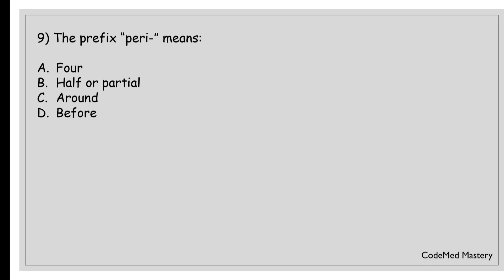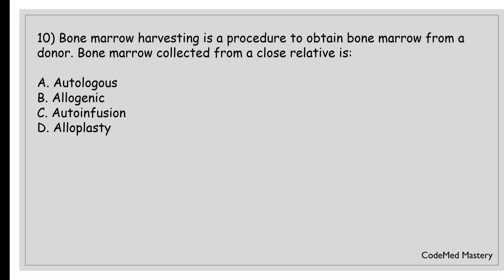Next question: the prefix 'peri' means: option A, for; option B, half or partial; option C, around; option D, before. The correct answer is option C, around. The prefix 'peri' is used in medical terminology to mean around or surrounding. For example, pericardium refers to the membrane surrounding the heart.